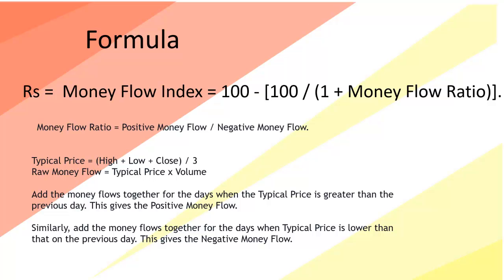In order to get the positive money flow, we need to add the raw money flow for the days when the typical price is greater than the previous day. Similarly, for the negative money flow, we need to add all the raw money flow for the days when the typical price is lower than the previous day. Once we have the positive and negative money flow, we can calculate the money flow ratio and then the Money Flow Index.